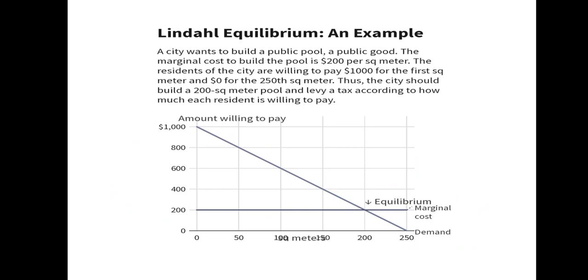For example, one square meter of pool space costs $200. If you ask that city — one square meter is $200 — the question is how much each resident is willing to pay. We need to make a pool of 200 square meters in our society. We have a graph here to illustrate this.